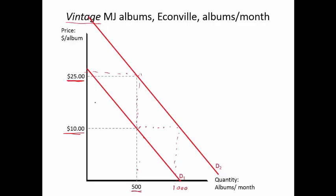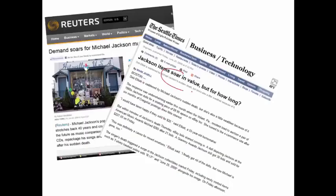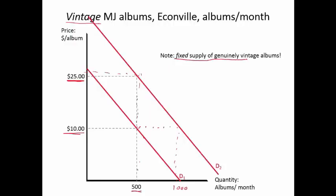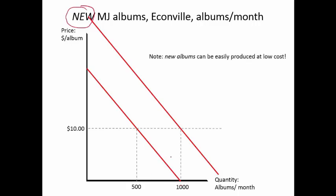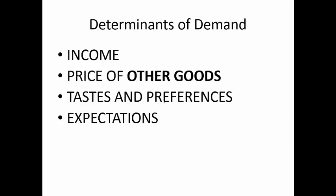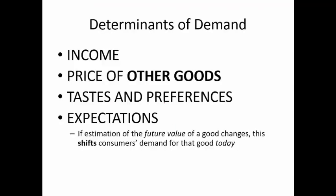At any price, people will now buy more than they previously bought — that's what higher demand means. At the old price they might buy around a thousand, or to buy 500 they'd be willing to pay $25 each. Note that there's a fixed supply of genuine vintage albums — you can't make more of those — so the supply curve is fixed at 500 and the adjustment must be strictly a price adjustment. New albums, however, could be reproduced at pretty constant marginal cost, so we might see strictly an increase in quantity at the same price.